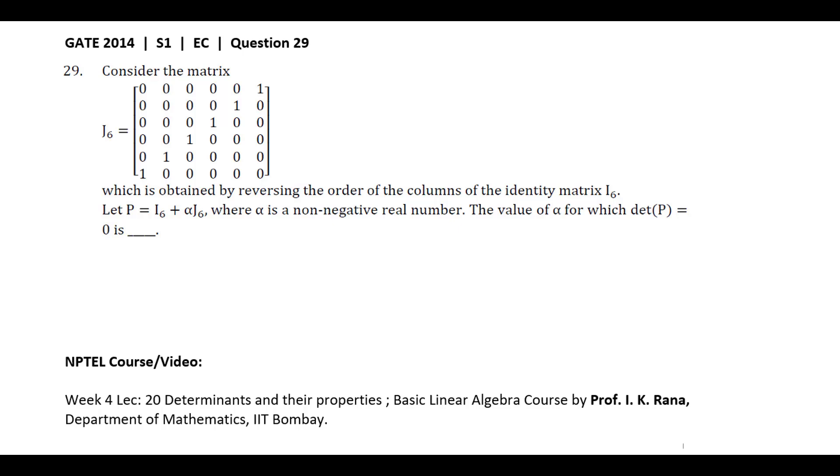This question is given in GATE 2014 Session 1 EC paper. Consider a matrix J6 equal to a diagonal matrix which is obtained by reversing the order of the columns of the identity matrix I6.